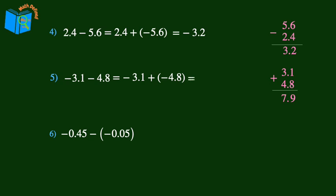The last problem here is negative 0.45 minus negative 0.05. Adding the opposite, we keep negative 0.45 and add the opposite, positive 0.05. Since the signs are different, we subtract and keep the sign of the number with the greater absolute value. 5 minus 5 is 0, and 4 minus 0 is 4, and we'll bring down the 0 in the ones place along with the decimal point, resulting in 0.40.